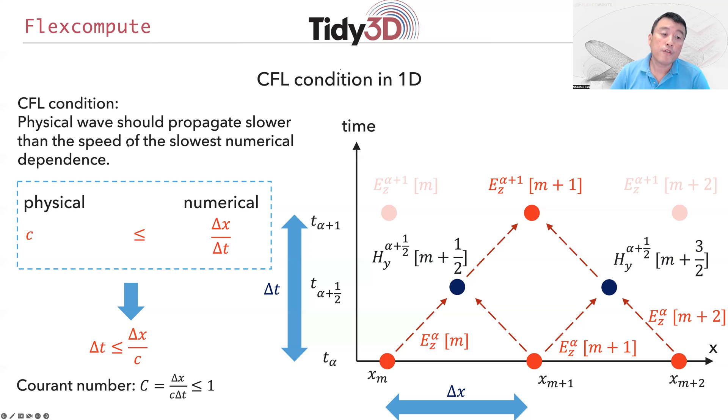A physical wave needs to propagate slower than the speed of this numerical dependency. Otherwise, the grid could never capture the correct physics. The speed of light needs to be smaller than the numerical speed. That naturally leads to an upper bound on choosing the time step given the space discretization. This is the CFL condition in one dimension.